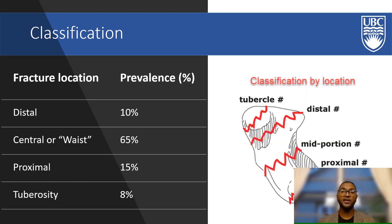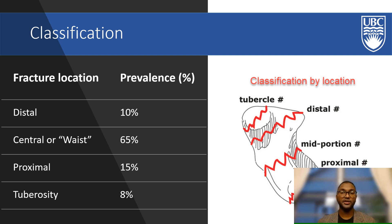Scaphoid fractures can occur anywhere along the carpal bone. However, they are most commonly found in the central or waist regions of the bone. Approximately 65% of all scaphoid fractures occur in this area. The second most common location is the proximal pole with a prevalence of 15%. Depending on the location of the fracture, there is an increased risk for avascular necrosis due to the retrograde blood flow found in the waist and proximal region of the bone. Furthermore, the location of the fracture helps determine the management.